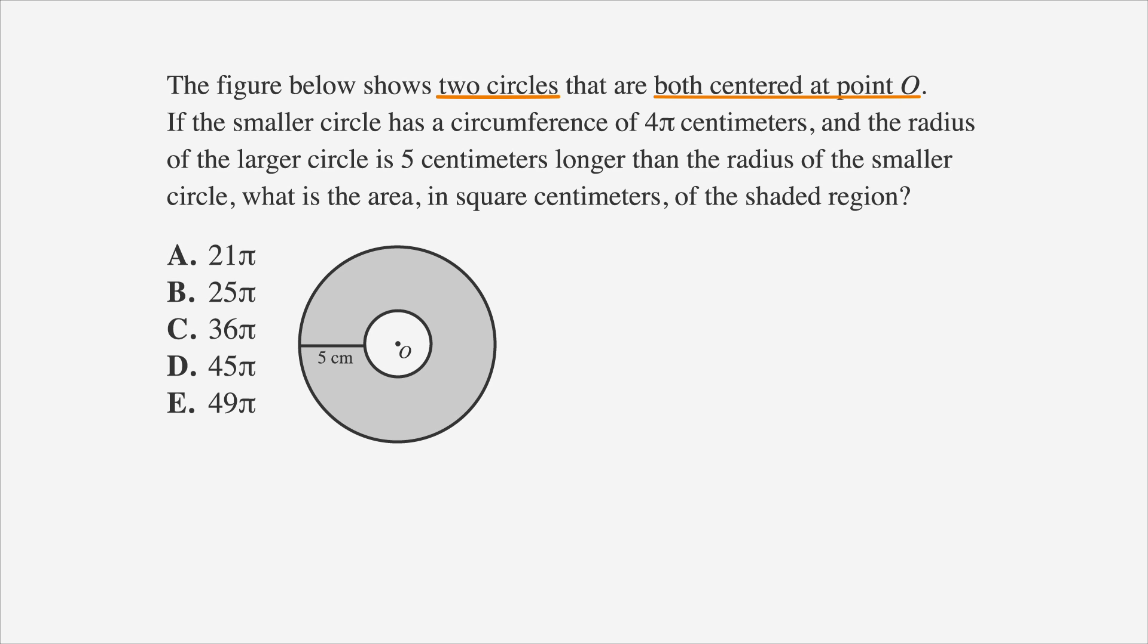Two circles, both centered at point O. Smaller circle has a circumference of 4 pi centimeters, and radius of the larger circle is 5 centimeters longer than the radius of the smaller circle. Next, let's circle the key terms and label the answer choices.